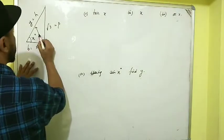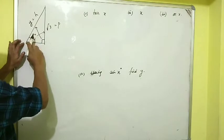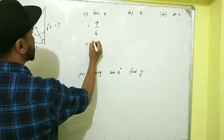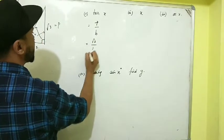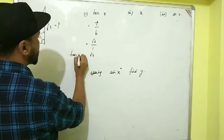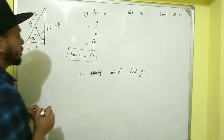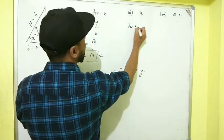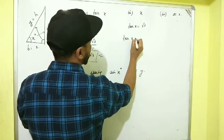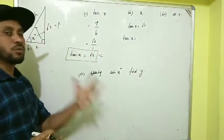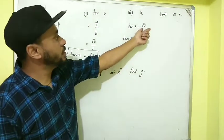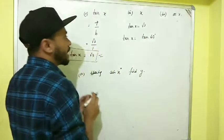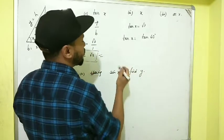Tan = perpendicular/base, so tan x = √3/1 = √3. That's answer for part (1). For part (2), tan x = √3, and looking at our table, tan 60° = √3. We equate the angles: x = 60°. Note: we can only compare angles when the trigonometric ratios are the same — tan with tan, sine with sine, etc.